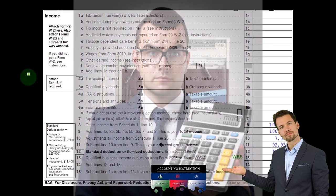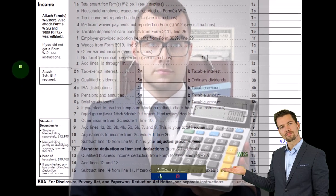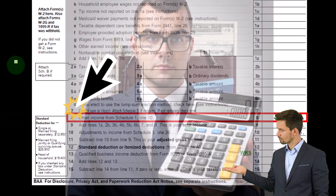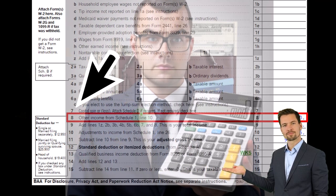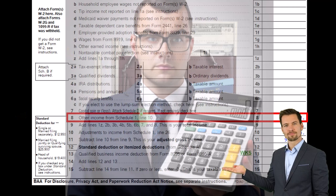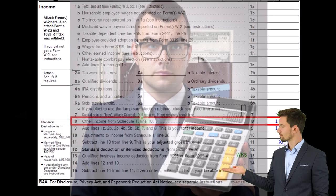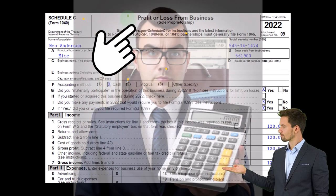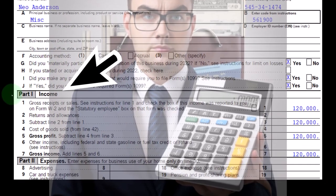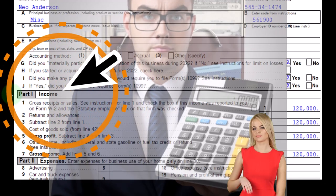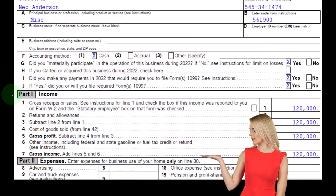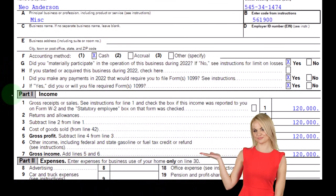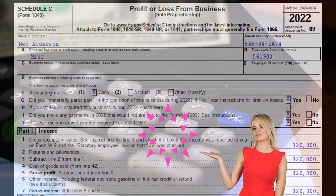Looking at page one of Form 1040: the Schedule C flows into Schedule 1, which flows into the first page of Form 1040 at line number eight. The Schedule C is a profit or loss from business — in essence an income statement format, income minus expenses. We now want to think about the self-employment tax.